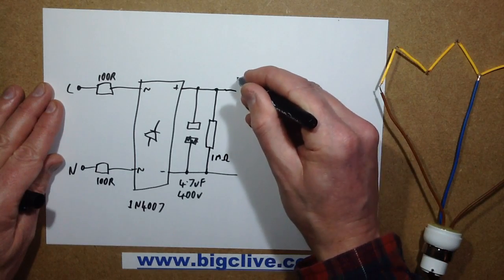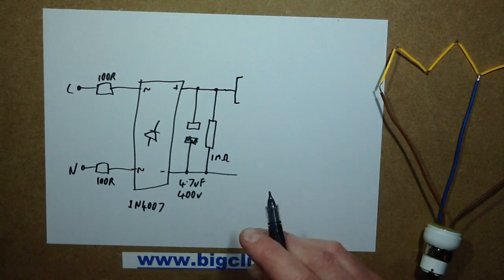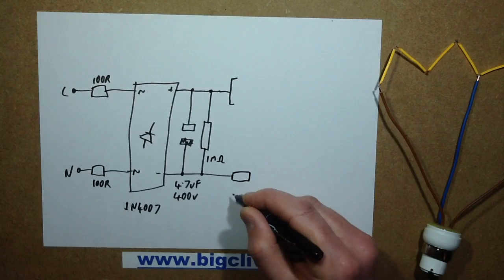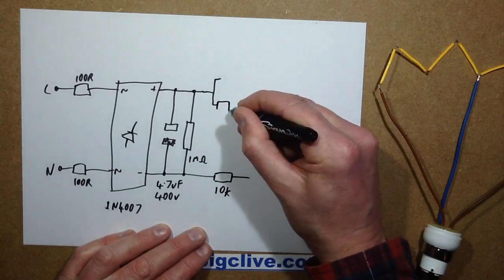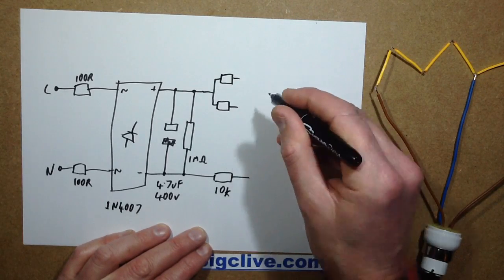And then, because I had 8 filaments, and the combined voltage of 8 filaments would have been too high just to put across this, I put one 10k resistor there. And then I put two separate 10k resistors there.